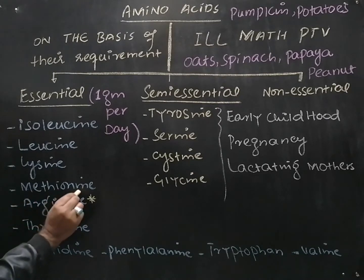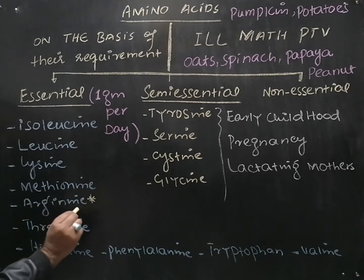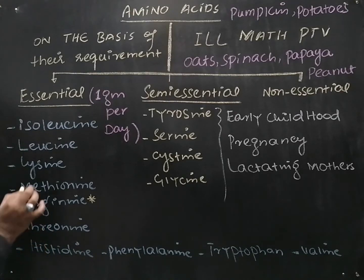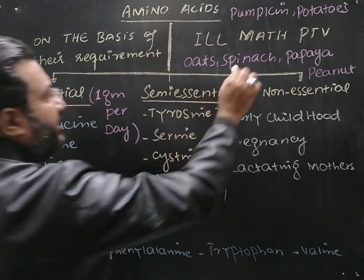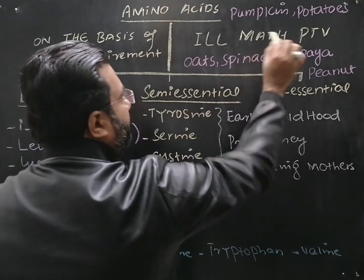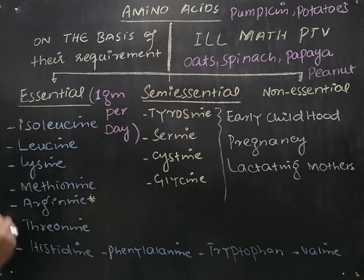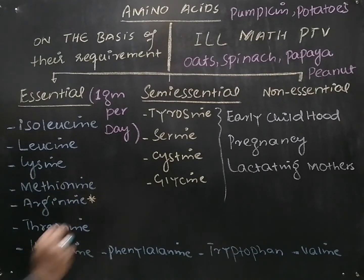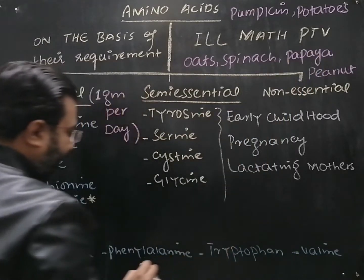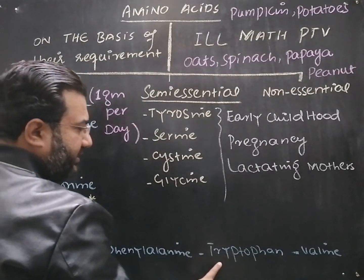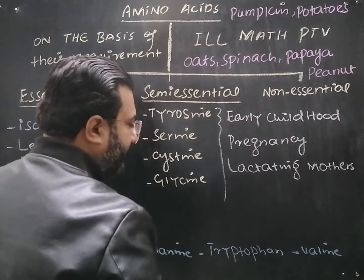Then M stands for methionine, A for arginine, T for threonine, and H for histidine. Taking the first letters of these four amino acids gives the word MATH. And the last word is PTV: P stands for phenylalanine, T stands for tryptophan, and V stands for valine.